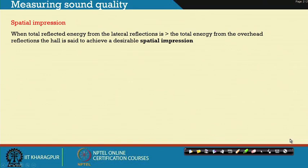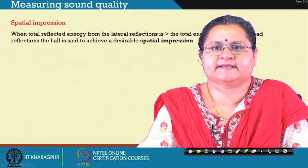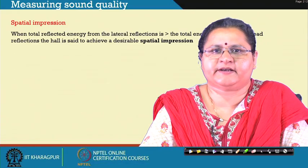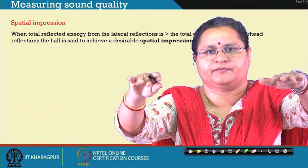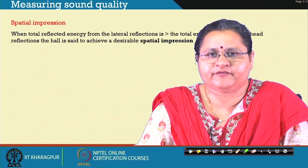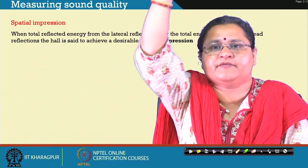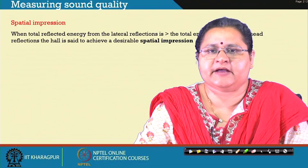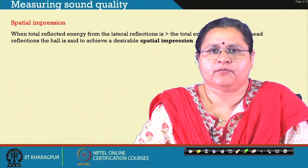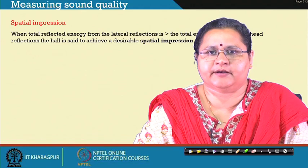Coming to the next phenomenon, that is spatial impression: if you look at the previous lectures, lecture 11 had the term impression. Here it is spatial impression. When the total reflected sound from the lateral reflection — that is from the walls, the energy coming from the side walls from early reflections — is more than that coming from the ceiling, then we say the hall has a spatial impression. To achieve desirable spatial impression you have to have more lateral reflections rather than more ceiling reflections.